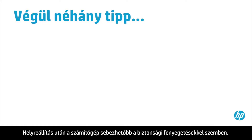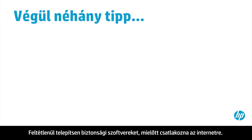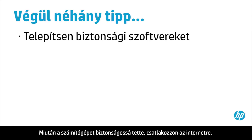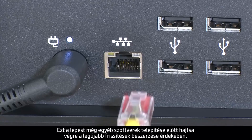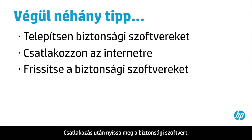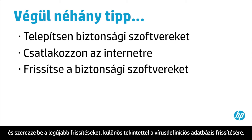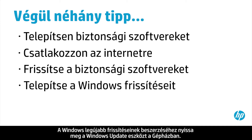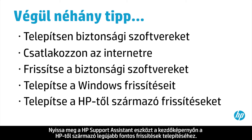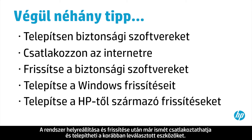After recovery, your computer is more vulnerable to security threats. Make sure you have security software installed before connecting to the Internet. Once your computer is secure, connect to the Internet. Do this before installing other software in order to get the latest updates to your system. After connecting, open your security software and get the latest updates, especially updates to virus definitions. Open the Windows Update tool in PC Settings to get the latest updates for Windows. Open HP Support Assistant on the Start screen to install the latest important updates from HP. Now that your system has been recovered and updated, you can reconnect and install devices that were unplugged previously.